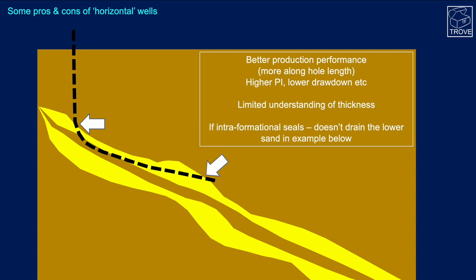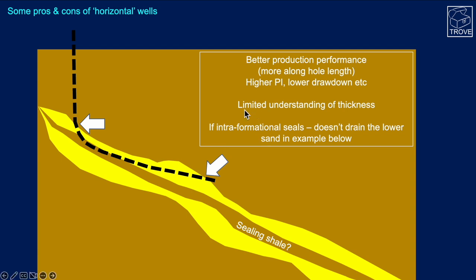Another drawback with horizontal wells: if we introduce a mid-reservoir shale — a ceiling shale — we penetrate the top of the reservoir, start to go into the shale, but steer up from it, and then go out through the roof of the reservoir. We might do this to get better production performance. More along-hole length means a higher productivity index, a lower drawdown, and more permeability-feet of reservoir. But we have a limited understanding of reservoir thickness, and if the column below is full of oil, our well wouldn't be penetrating or draining it.